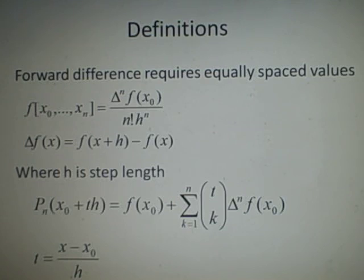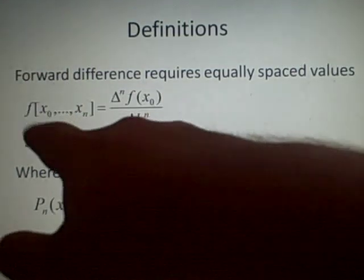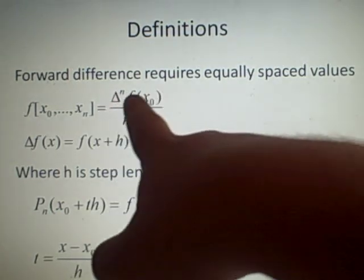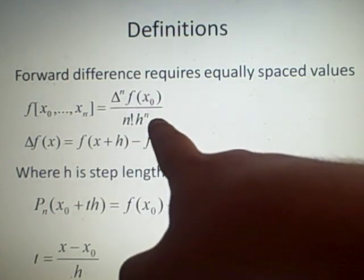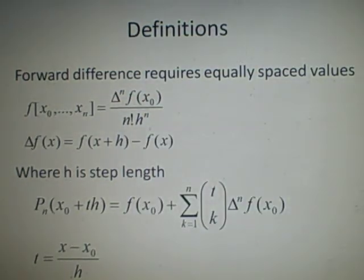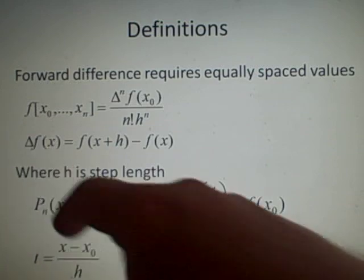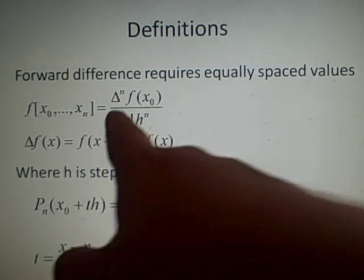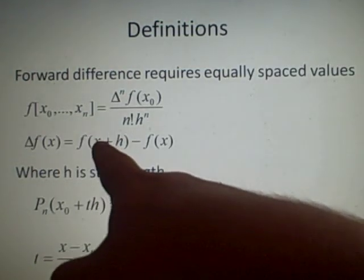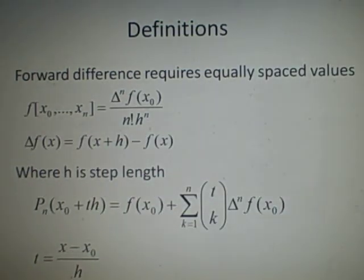The last method is the forward difference method. This requires equally spaced x values — x0, x1, x2 all equally spaced, usually by one unit. We define delta^n f(x0) over n! times h^n for each gap. Delta f(x) is just f(x+h) minus f(x), where h is the step length.